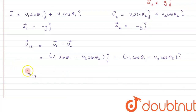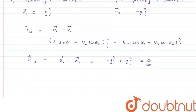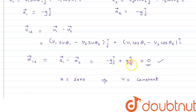Similarly, the acceleration of particle 1 with respect to particle 2 can be written as a1-bar minus a2-bar. Carefully analyzing: a1-bar is minus g j-cap and a2-bar is also minus g j-cap, so the relative acceleration comes out to be zero. This is a quite important result. If acceleration is zero, that means velocity must be constant — because acceleration is the change in velocity with respect to time. So the relative velocity between the two particles is constant.